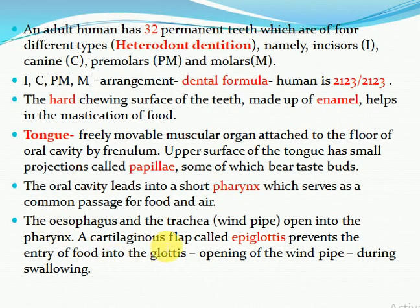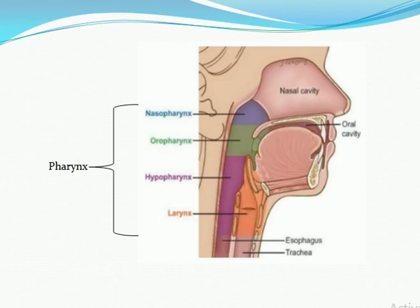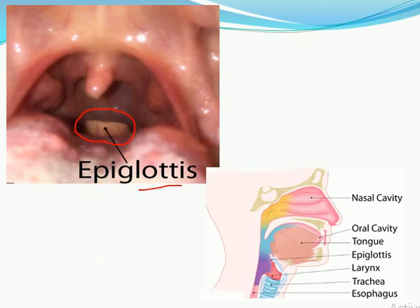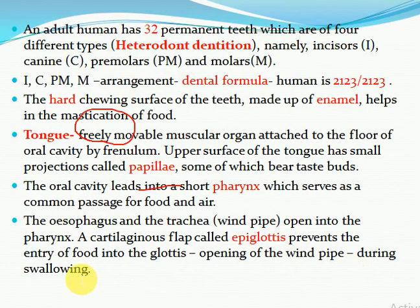The esophagus and trachea open into the pharynx. A cartilaginous flap called the epiglottis prevents the entry of food into the glottis — the opening of the windpipe — during swallowing. The epiglottis covers the air pipe when we eat food. It prevents entry of food into the glottis by covering the opening of the windpipe when we swallow food.